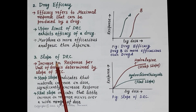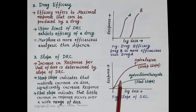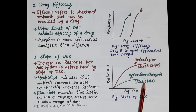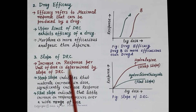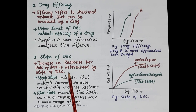After discussing drug efficacy, let's understand the information that can be collected from the slope of the dose response curve. A steep slope and a flat slope are shown in this figure. The increase in response per unit of dose is determined by the slope of the dose response curve — that is, how much increase in response is observed by increasing the dose of a drug by one unit.